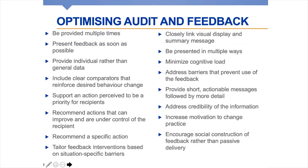These 15 suggestions include: provide feedback more than once (from the Cochrane review); present feedback as soon as possible after data collection; provide individual rather than general data — if you can get down to the physician or the ward level it's better than getting to the hospital level. These are a set of principles we can start to use when designing our audit and feedback, and for some we have good empirical evidence, for others a strong theoretical rationale.